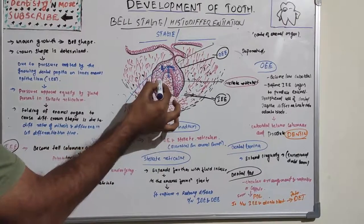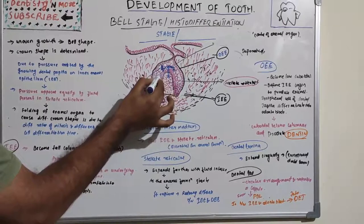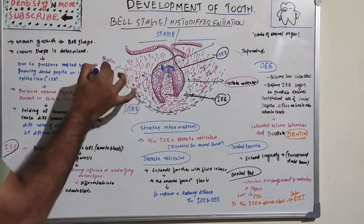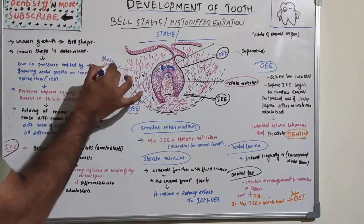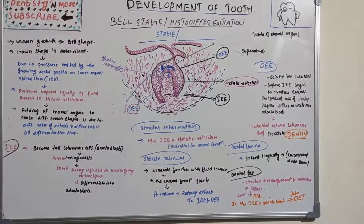The stratum intermedium is a new structure appearing in the bell stage — it was not present in the cap stage. It consists of a few layers of squamous cells located between the inner enamel epithelium and the stellate reticulum. Its function is essential for enamel formation.